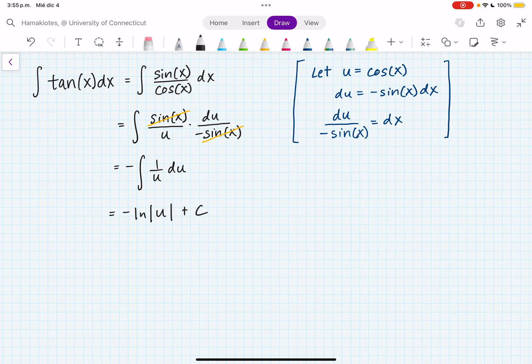Now don't forget to plug in what u is at the end. So this is actually minus ln, the absolute value of cosine of x, plus c. And that is our final answer.